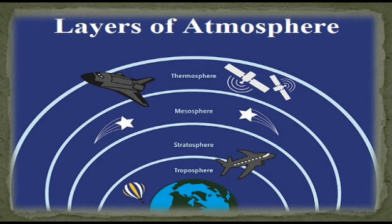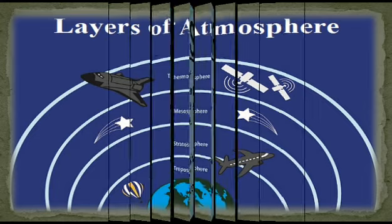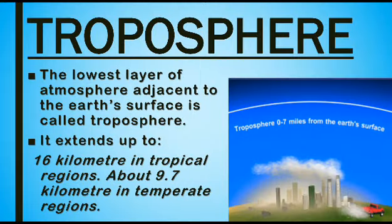The atmosphere around the earth is divided into a series of layers on the basis of temperature at different altitudes. Those vertical layers of atmosphere are troposphere, stratosphere, mesosphere, thermosphere, and exosphere. Now we will learn about these different layers one by one.